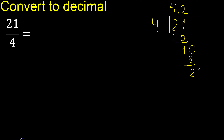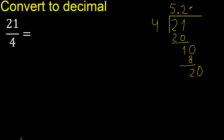Next, there is no number, therefore complete — always complete with 0. Point is here, 0 point. 20. 4 multiplied by 5 is 20. 20 minus 20 is 0. Therefore, finish.